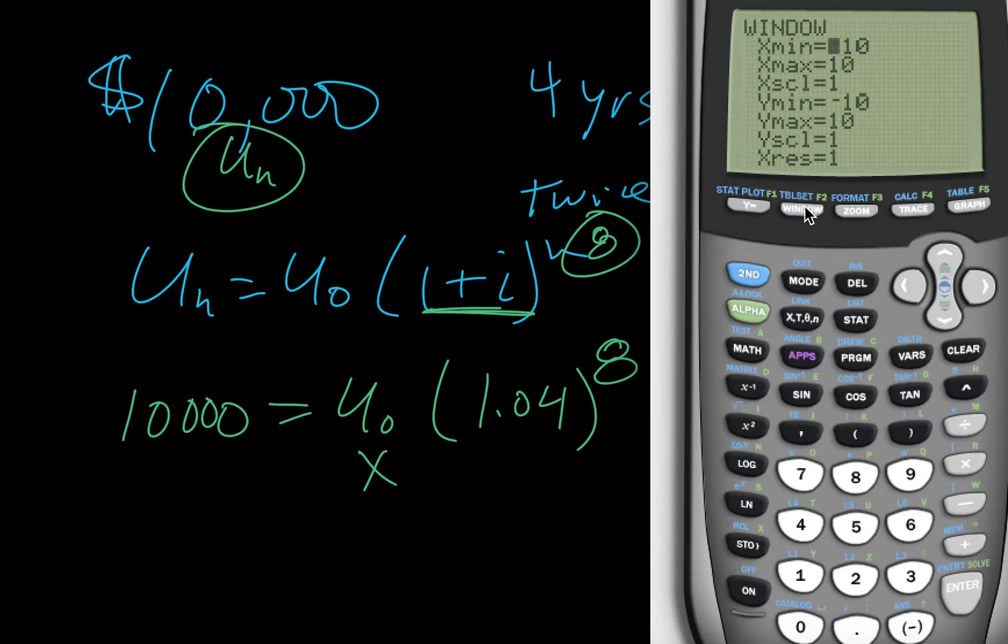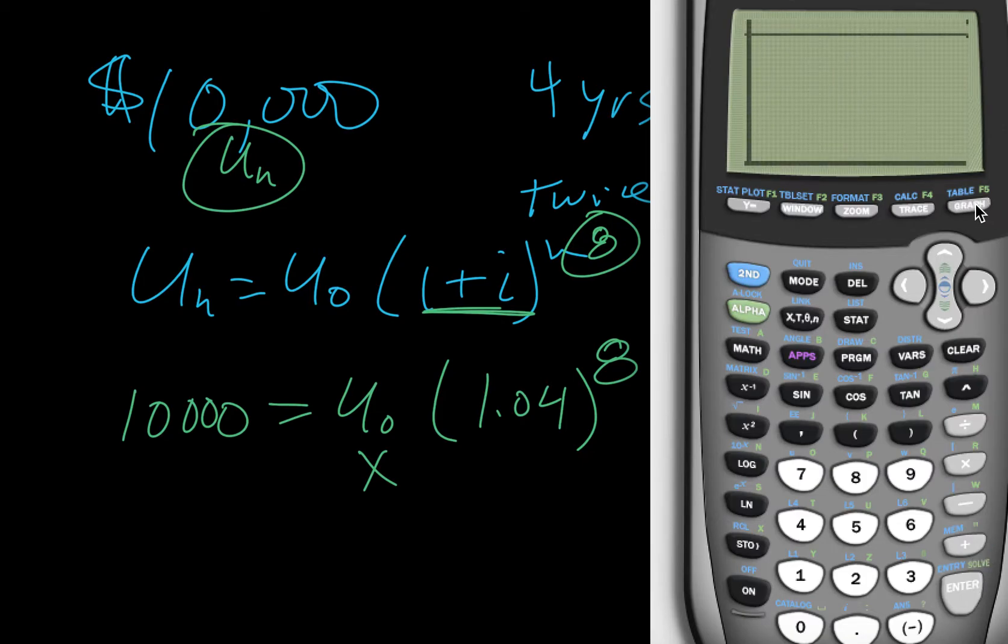And then we want to change our window. So we want to make sure our y max can see that 10,000. So I'm going to say 11,000. And I'm guessing we'll need to, let's say 100. Well, let's see. Probably more than that. Because how much would we need to invest? I don't know. I'm going to say, I'm just going to say 1,000 to be safe. And we'll see what happens.